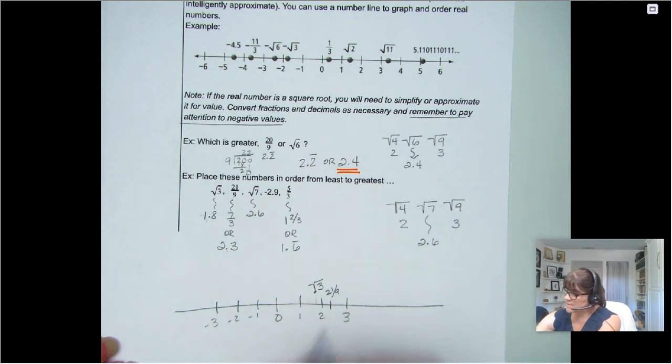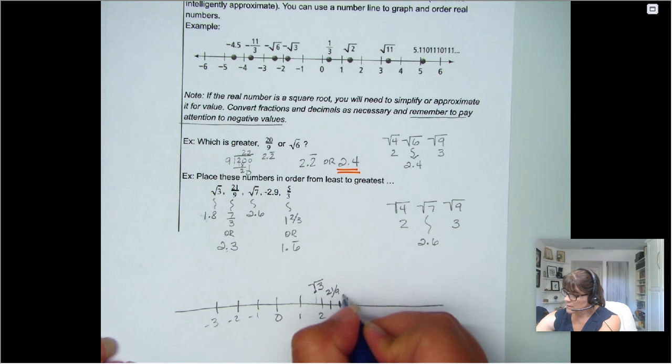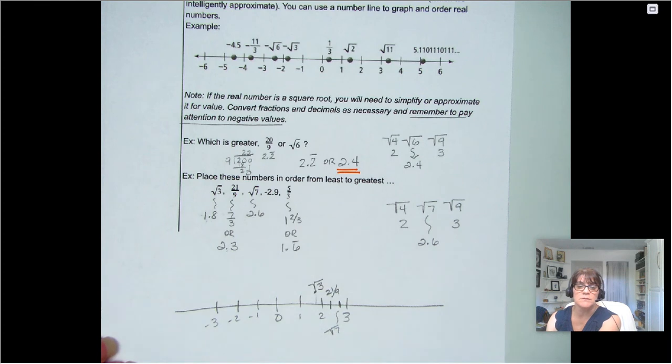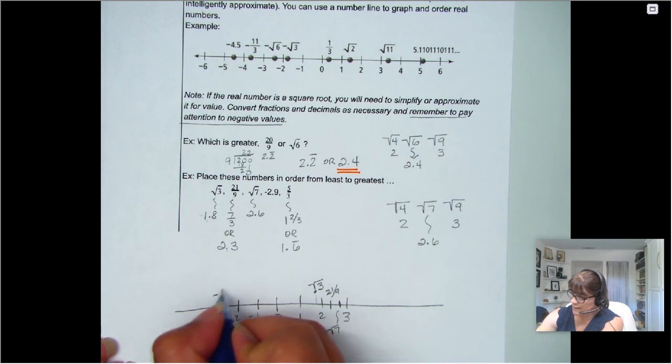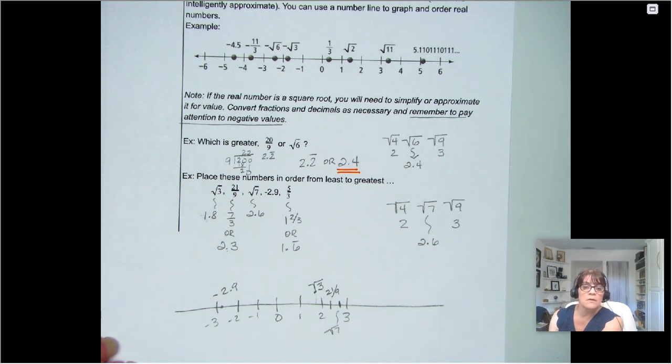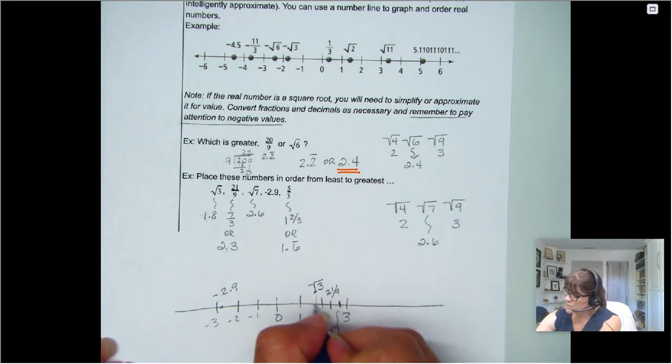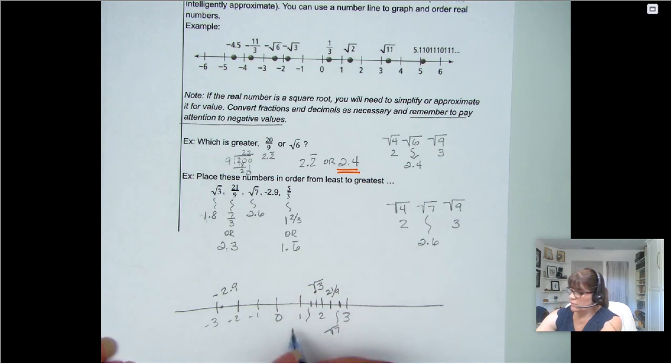Square root of 7 we said was about 2.6. So that one could be the square root of 7. Negative 2.9. Remember, I warned you not to forget the negatives. So here's going to be negative 2.9. And then 5 thirds, 1 and 2 thirds, that's going to be 1.8. It's going to be a little bit less, so 5 thirds.